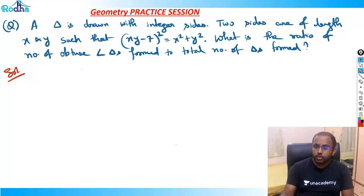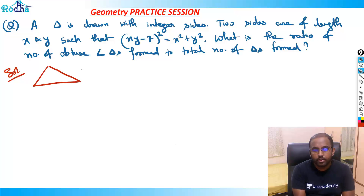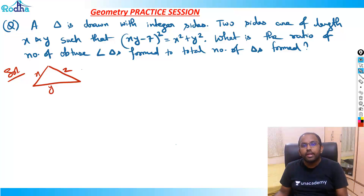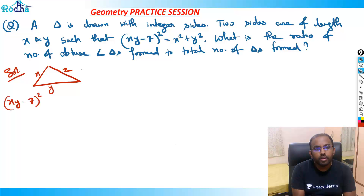To solve such questions, let's assume a triangle with sides X, Y and let the third side be Z. If I expand the equation (XY - 7)² = X² + Y², I get X²Y² + 49 - 14XY = X² + Y².